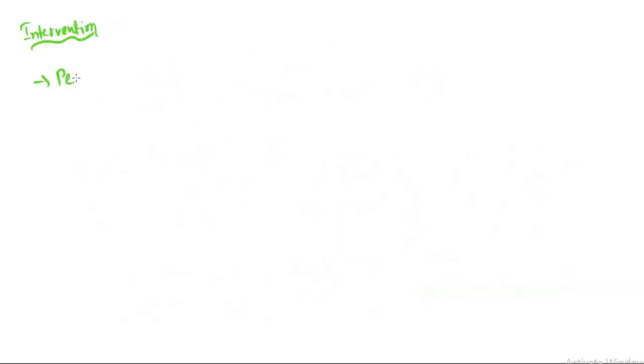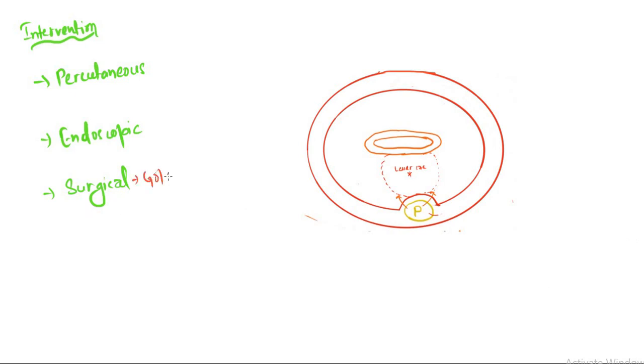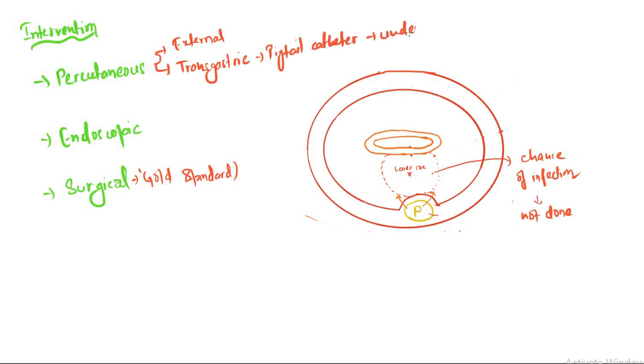Intervention: we have three types—percutaneous, endoscopic, and surgical. Surgical is the gold standard even now. For percutaneous, we have external drainage, but there is a risk of infection, so it's not done. Another percutaneous option is transgastric, where we put a pigtail catheter under radiologic guidance. In endoscopic, we can insert a tube drain or we can put a stent across the ampulla.